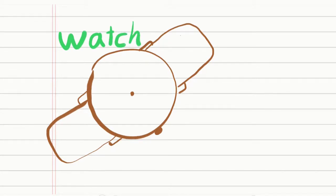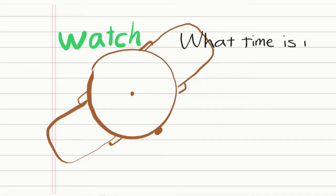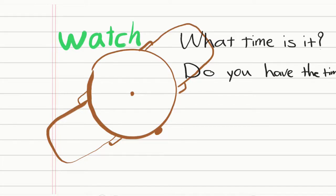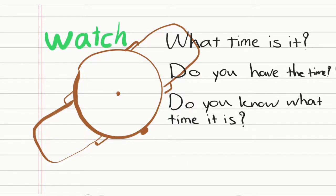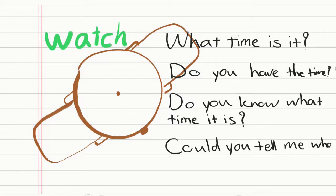The question for asking about the time is this. For example: What time is it? Or we can say: Do you have the time? Or we can ask it like this: Do you know what time it is? Or we can ask it like this: Could you tell me what time it is? So these are all the questions.